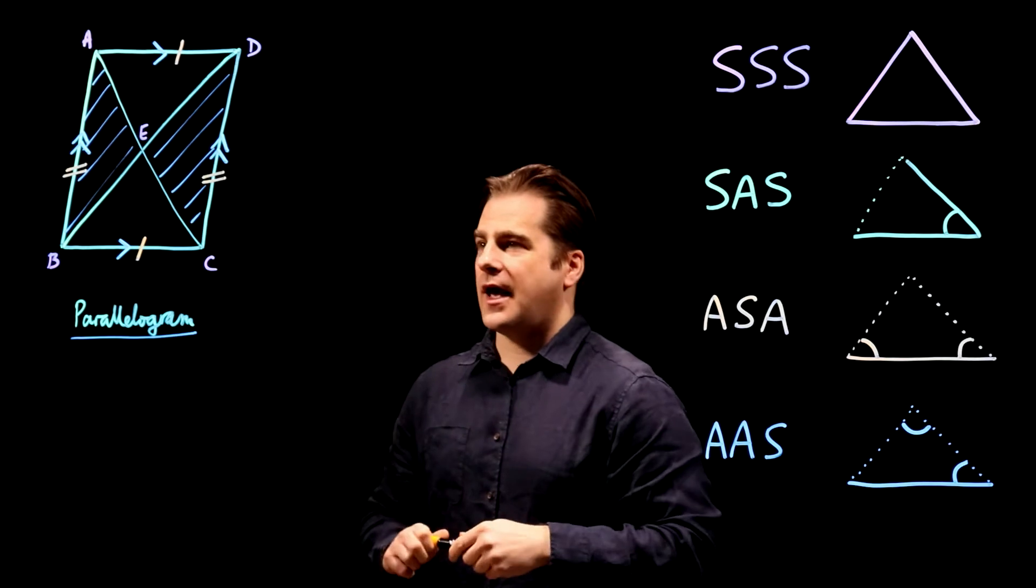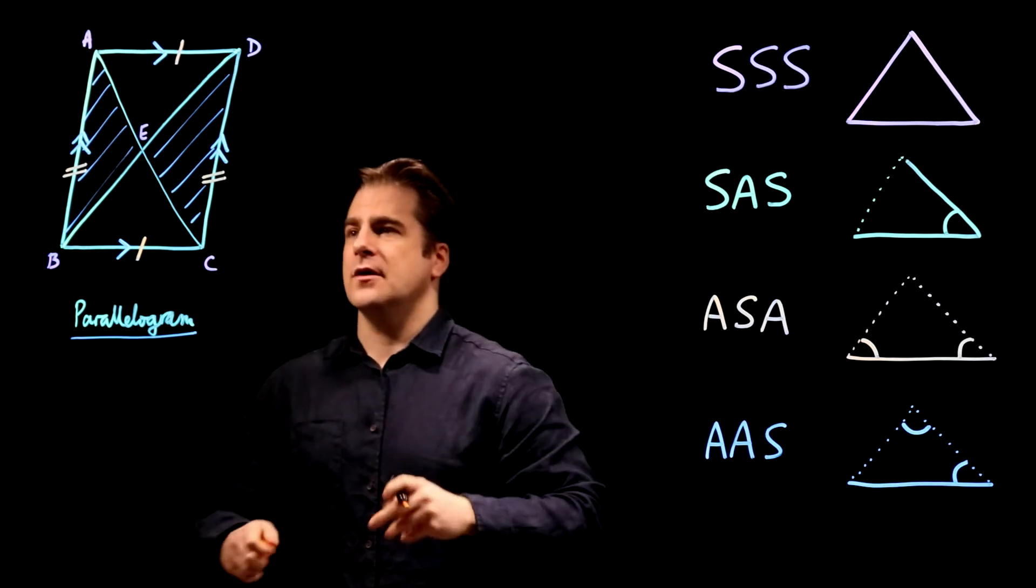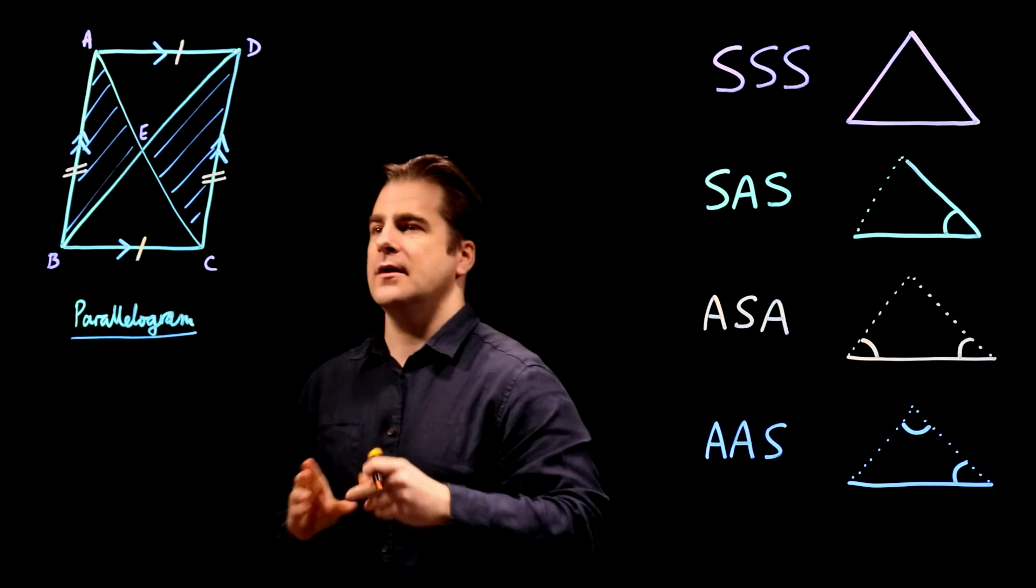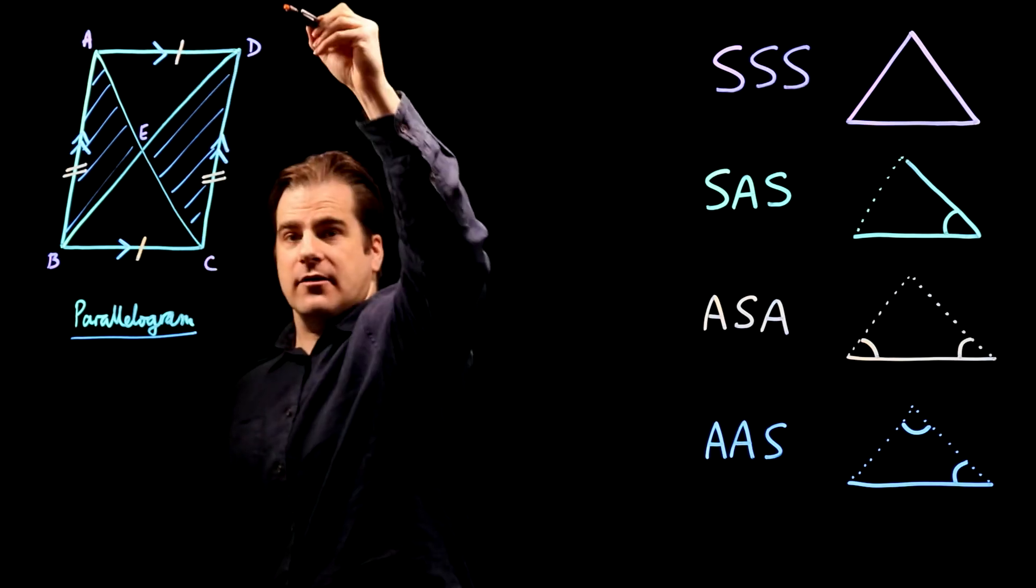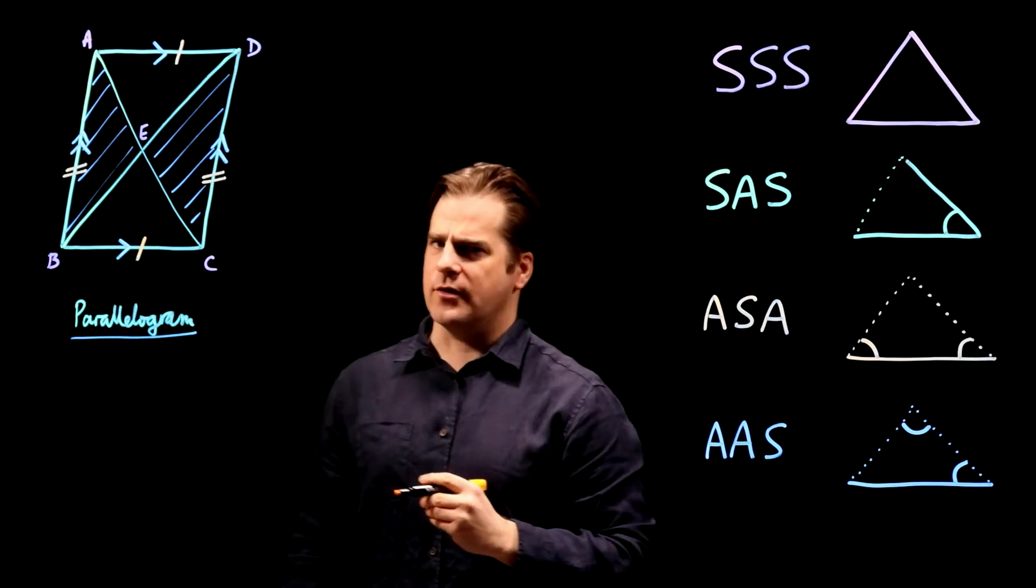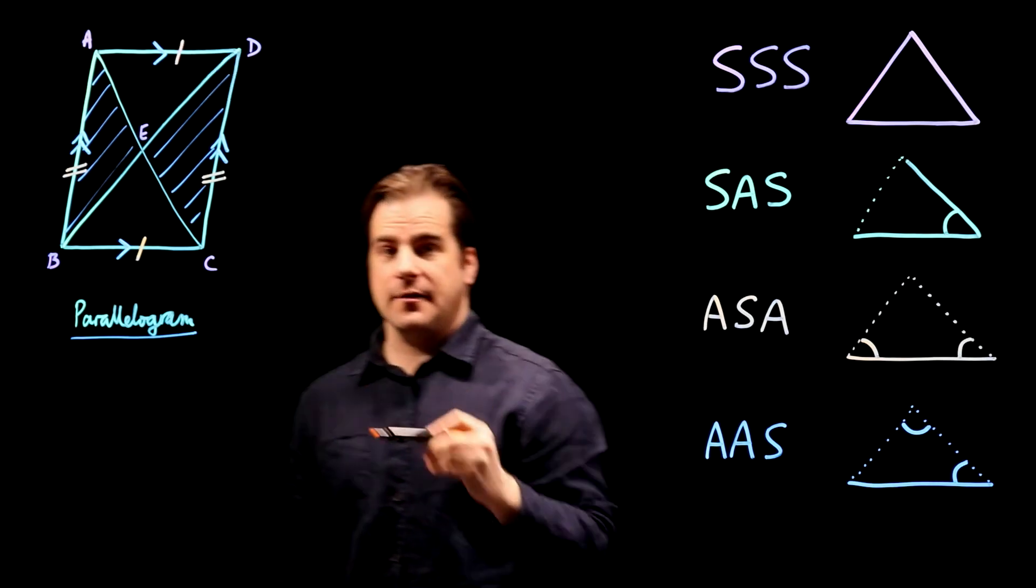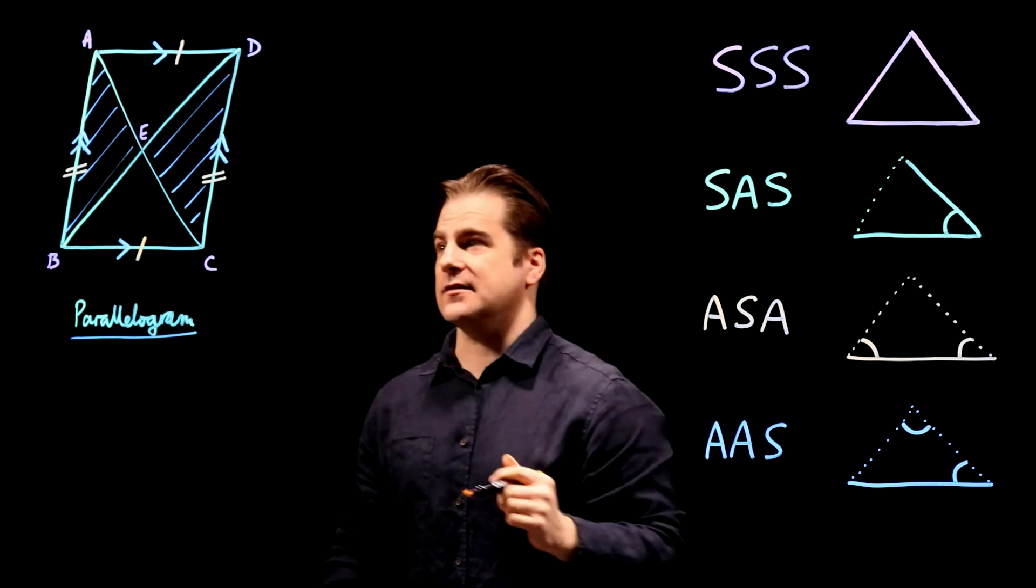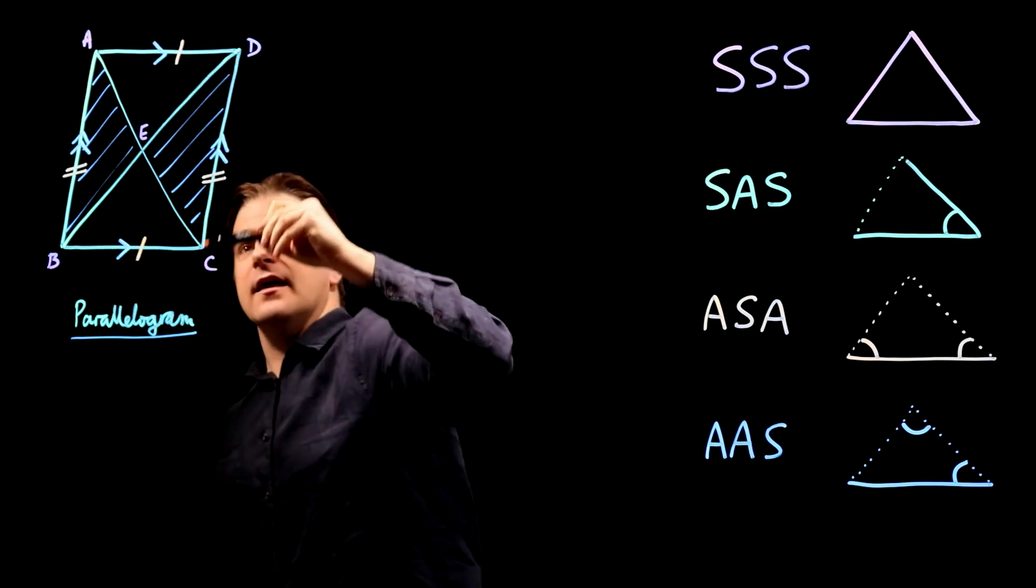Now angles, what do we know about the angles? Well, these two lines are parallel, and AC is a straight line, even though I haven't drawn it brilliantly straight, intersecting both of them, which means we have Z angles.